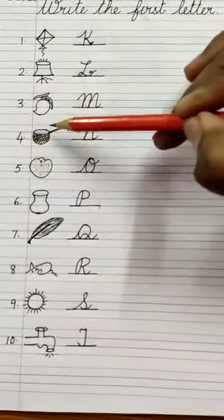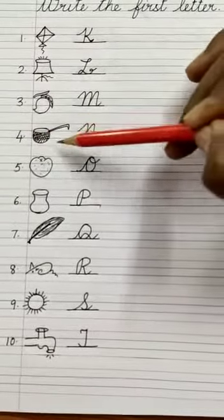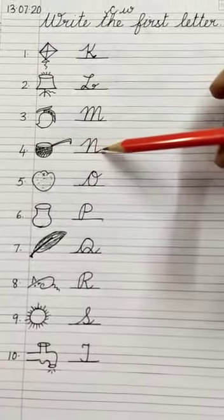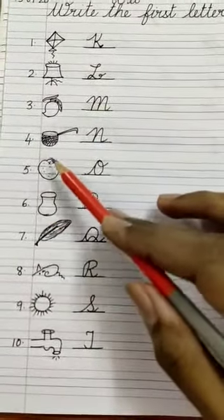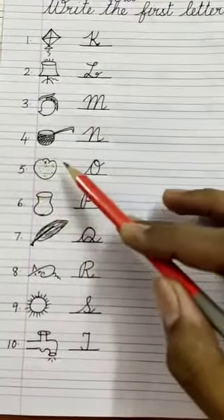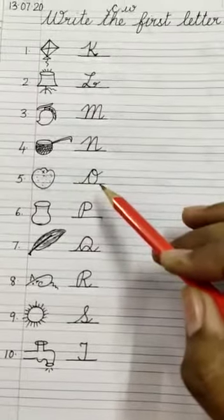Number four, you will draw a net like this and write letter N. Number five, you will draw an orange and write letter O.